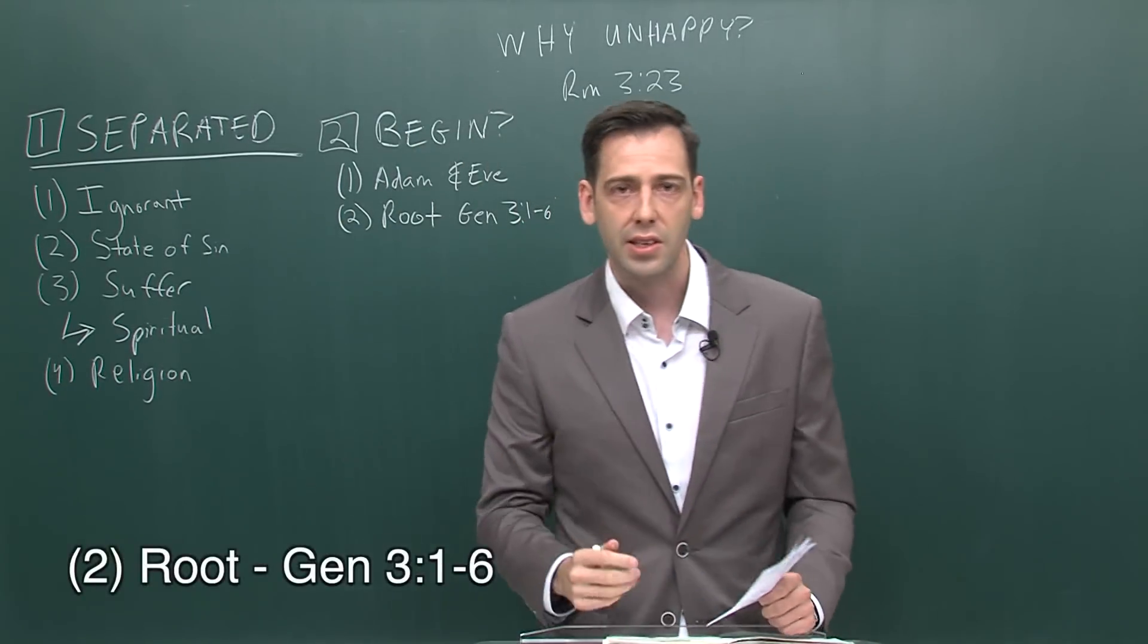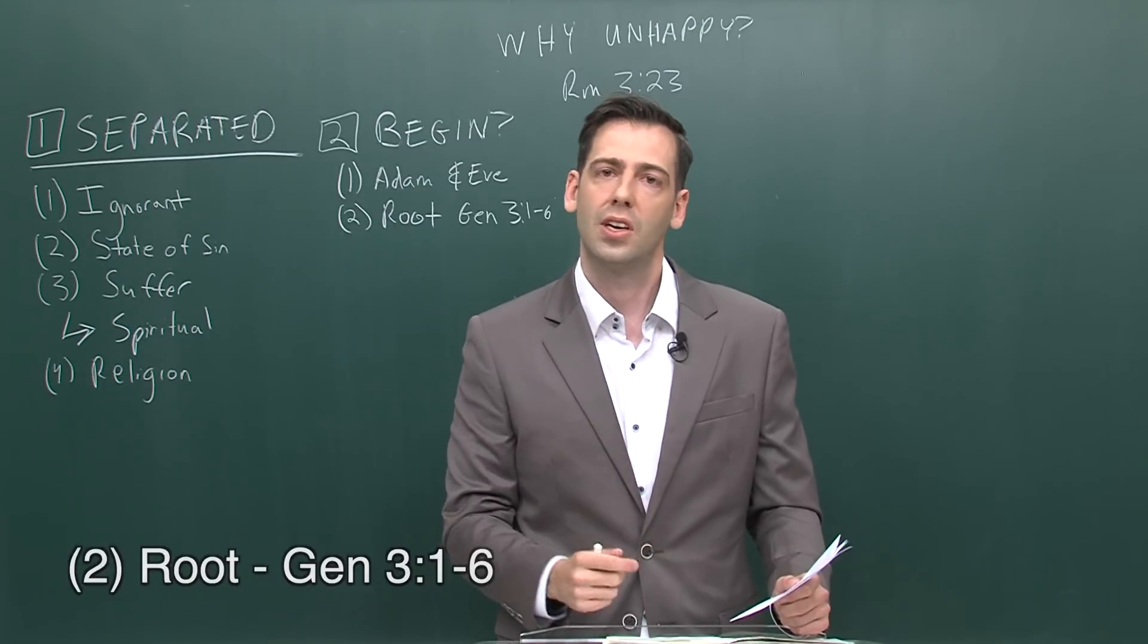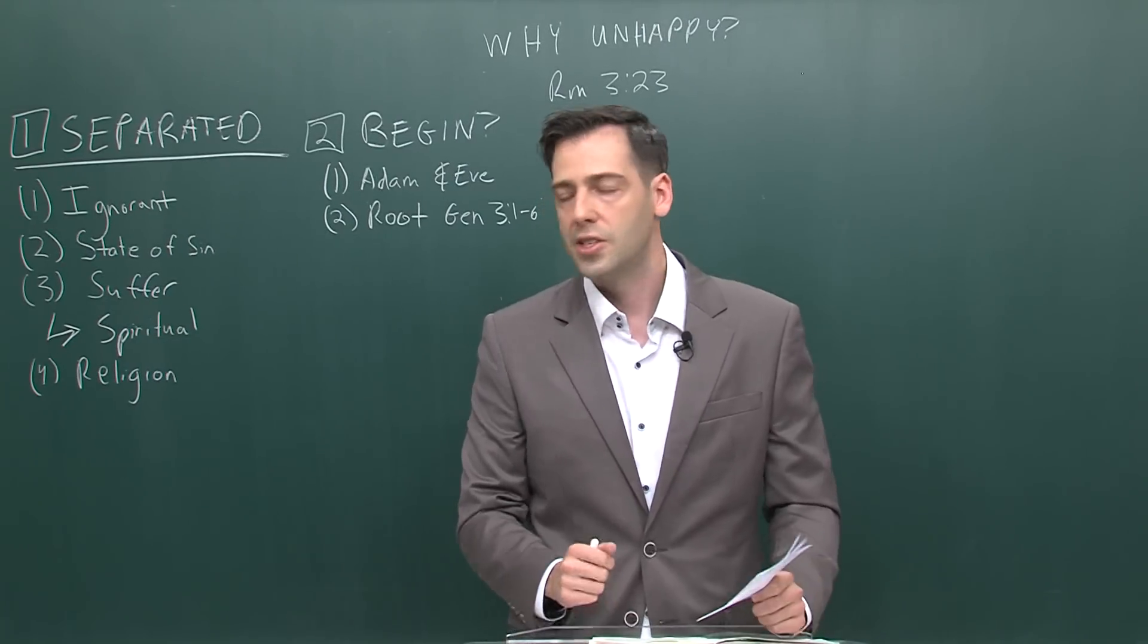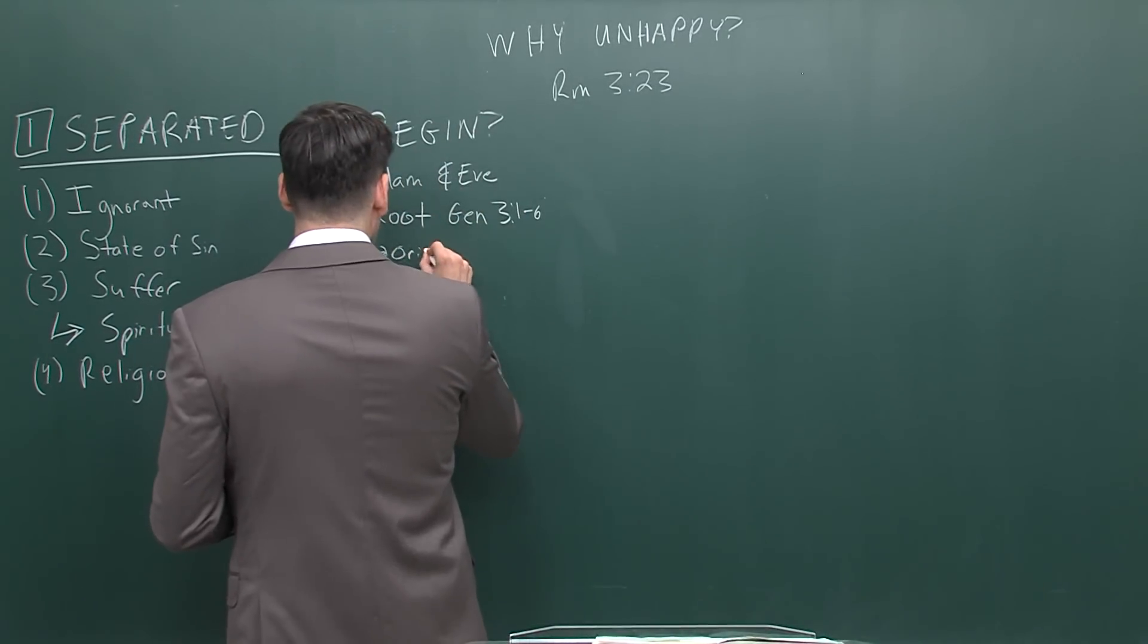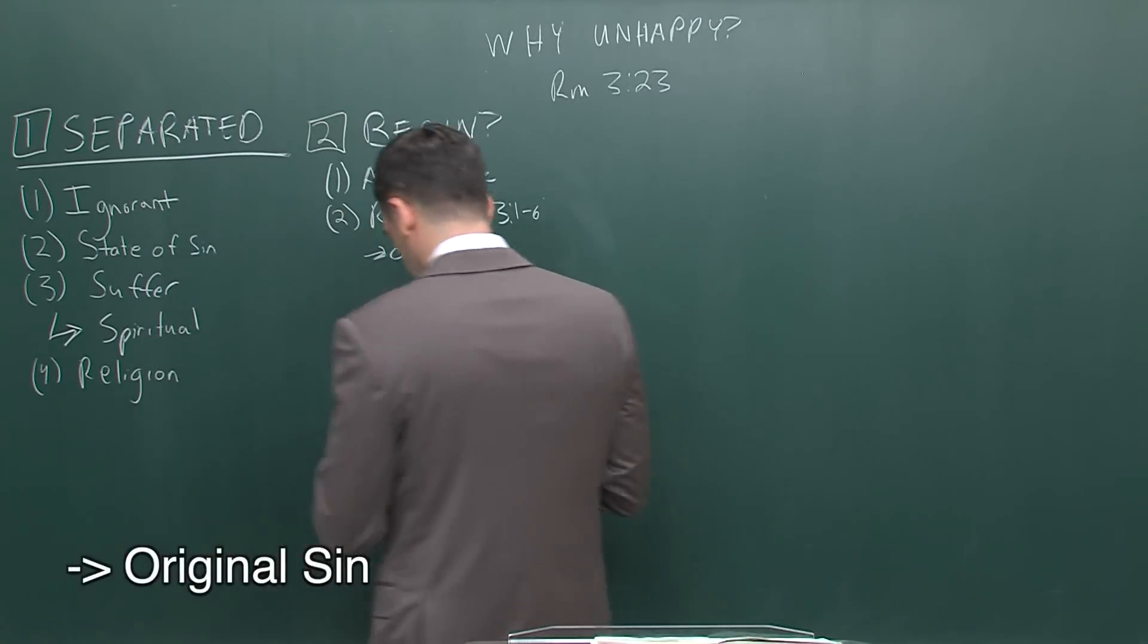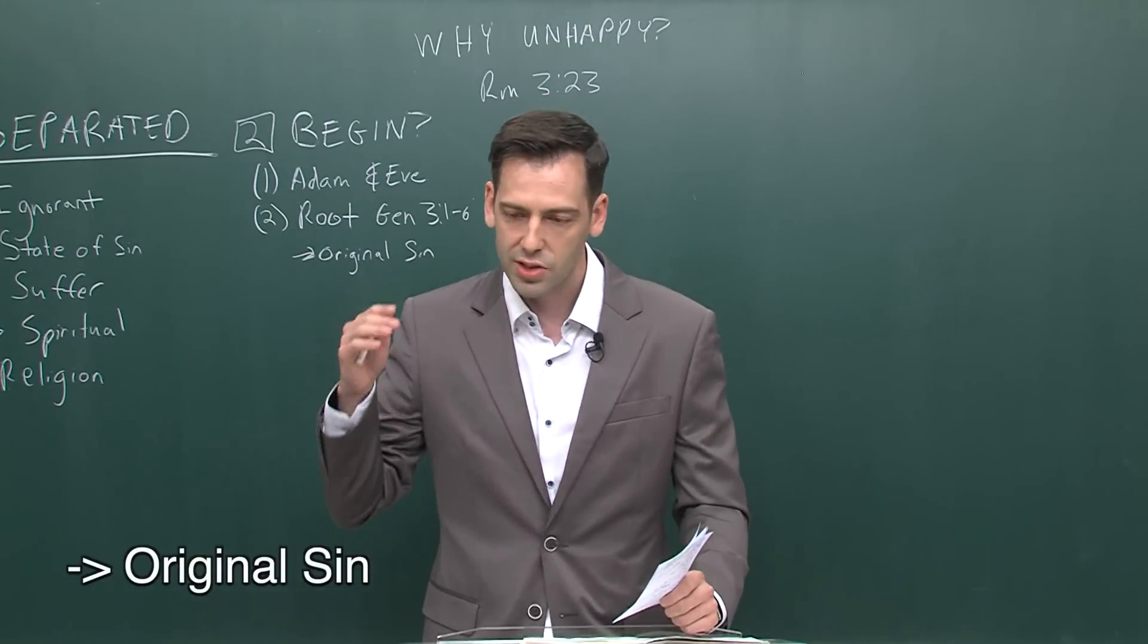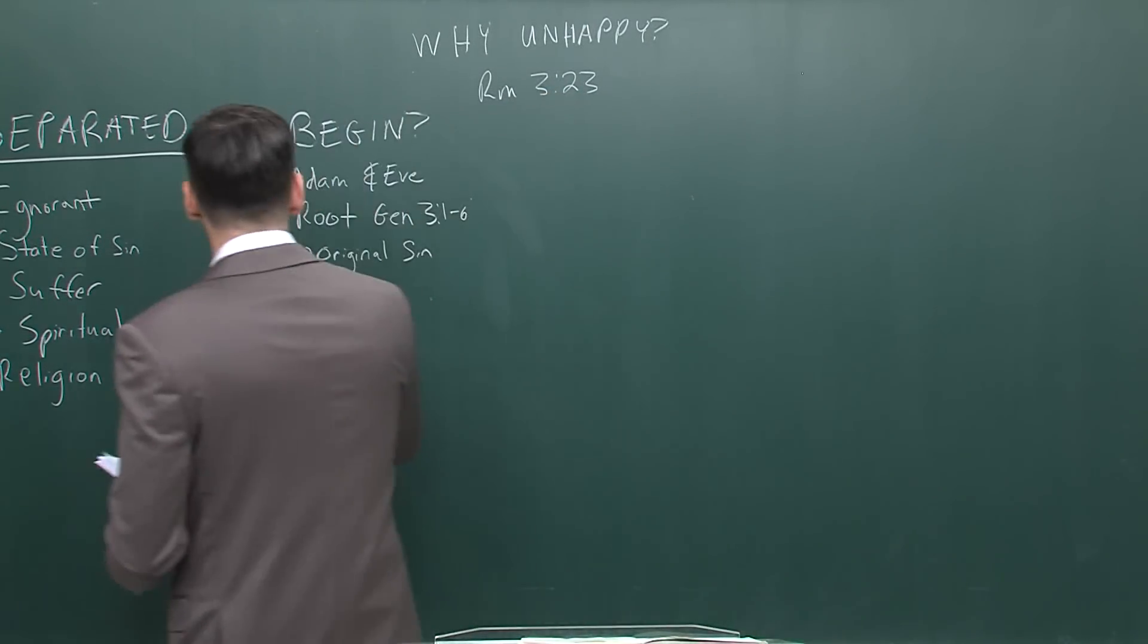We can find it in the Bible in Genesis 3, verses 1 to 6. Adam and Eve. They were full of pride. They wanted to be God themselves. And so, ultimately, they disobeyed God's word. And so, we call that original sin. Original sin is when mankind first sinned. And this is carried down generation to generation to generation. But because of that sin, there is a result.